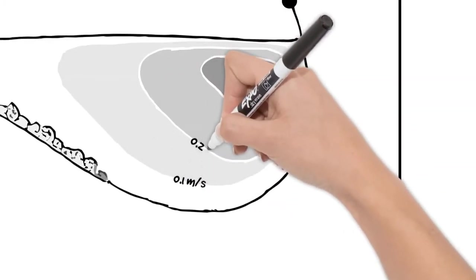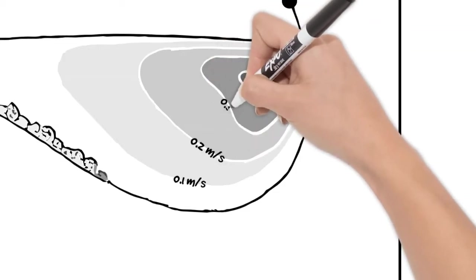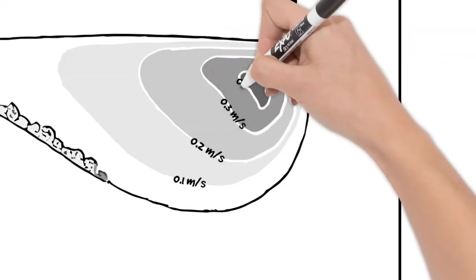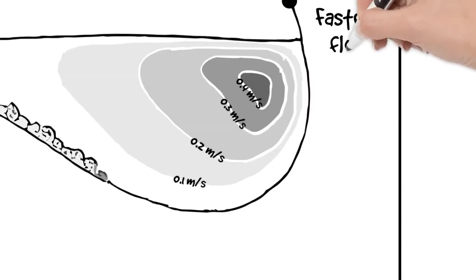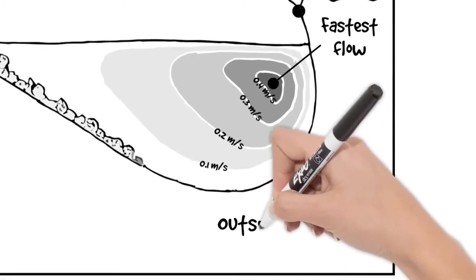If we label the ISO lines in meters per second we can see how where there's areas of friction between the bed and the banks there's less velocity, and at the point on the outside of the bend you have the fastest flow on the river.